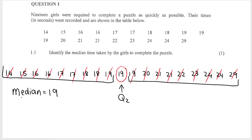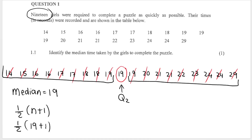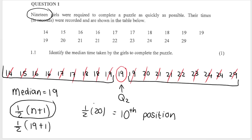There's another way we can determine the median. To find the position of the median, we can use the formula (n+1)/2, where n is the total number of data points. They said there were 19 girls, so 19 total data points. 19 plus 1 is 20, so half of 20 is 10. This formula gives me the position of the median, not the median itself — the median will be in the 10th position.